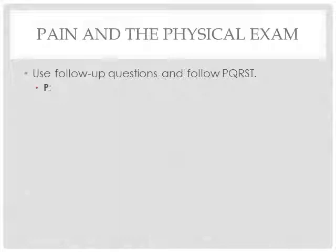P stands for Provocation — basically, how did the injury occur and what activities increase or decrease pain. Q is for Quality, or the characteristics of the pain — for example, how does the person describe it? Do they describe it as sharp, dull, or aching? Those types of descriptors can tell you what type of pain the individual is having, or even what structures are involved, because different structures and how they've been injured can impact how the person experiences pain.